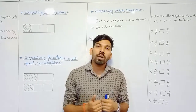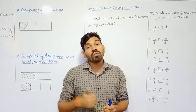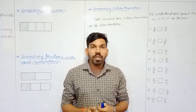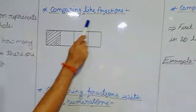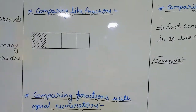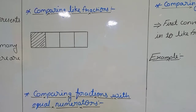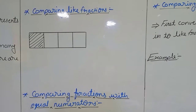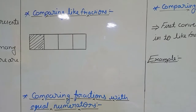Whenever we have two fractions, how are we going to do the comparison between them — which one is greater, which one is smaller, or are both equal? Let's learn in detail. Comparing like fractions: whenever we have like fractions, what do we mean by like fractions? Like fractions means the fractions which have the equal denominator. The fractions which have an equal denominator are called like fractions.